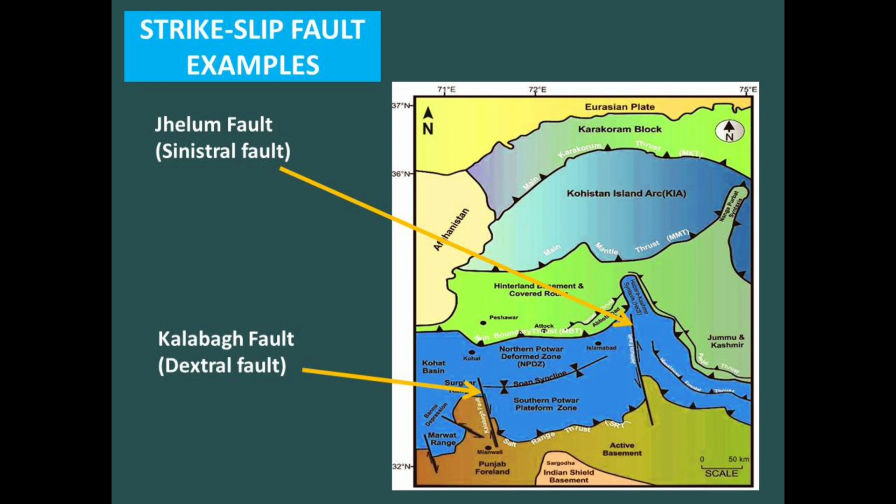Examples from Pakistan include the Jhelum fault on the eastern boundary of the Salt Range, which is an example of a left lateral strike-slip fault. The other name for left lateral strike-slip fault is sinistral fault. The example of a right lateral fault is the Kalabagh fault on the western boundary of the Salt Range, also known as a dextral fault.